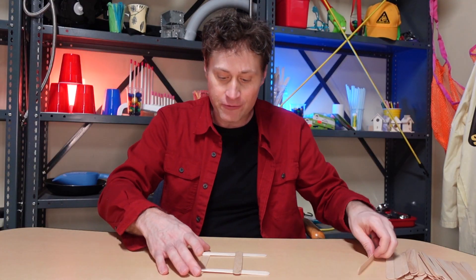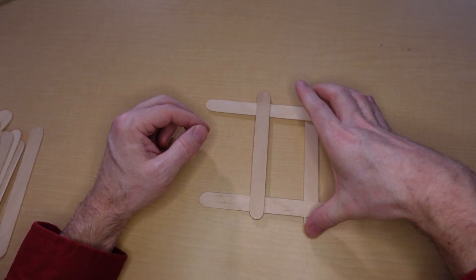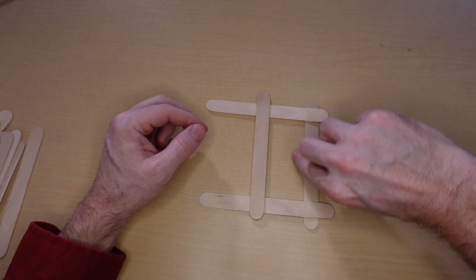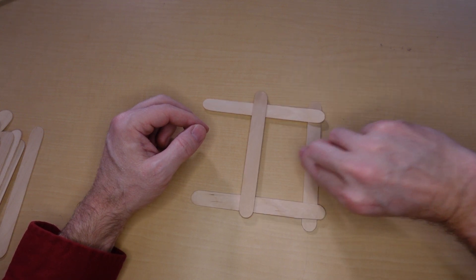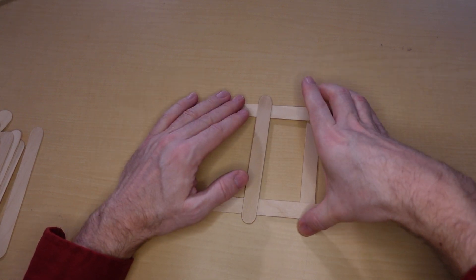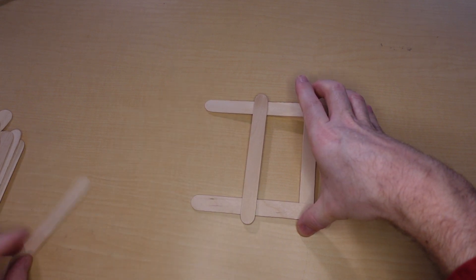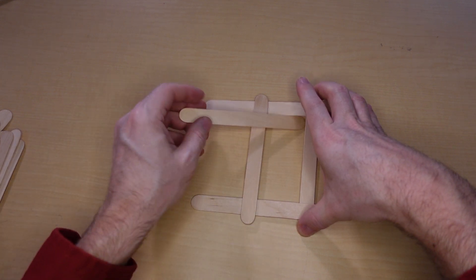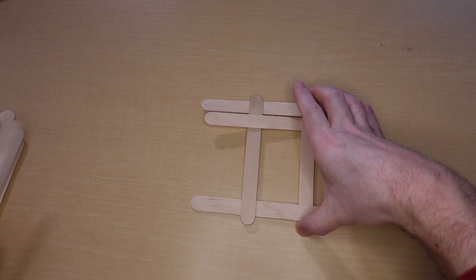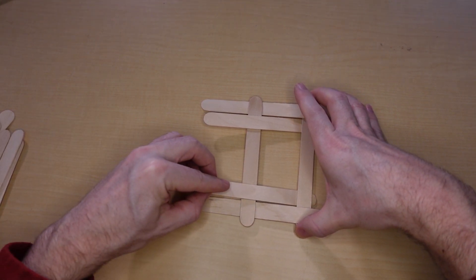Then what you do is you lift up this one stick. And if your hand isn't big enough to go from both ends, you can pick it up from the middle, like that. But what you want to do is you don't have to pick it up much. All you have to do is just slip two more popsicle sticks in underneath, like there and there, just a little bit.